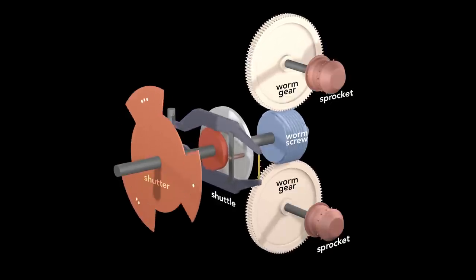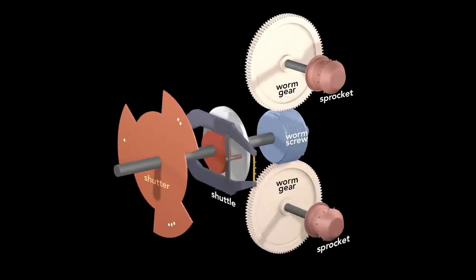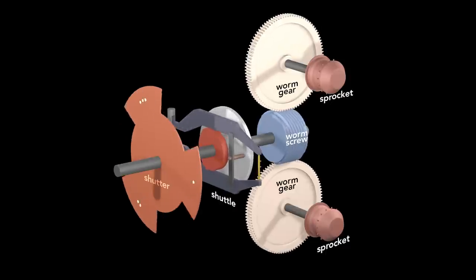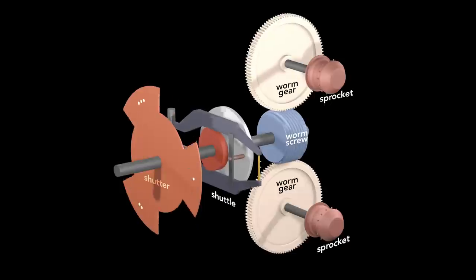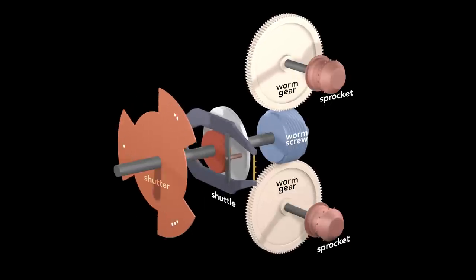Since there are 14 teeth on a sprocket, the top sprocket moves one frame worth of film from the supply reel, and the bottom sprocket pulls one frame through the projector. This setup keeps all the important mechanisms in sync.